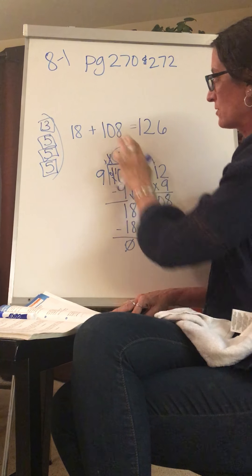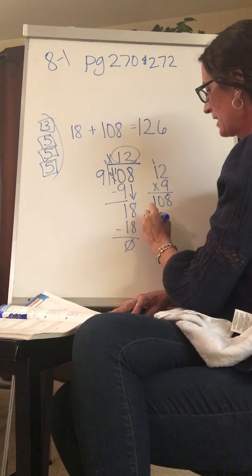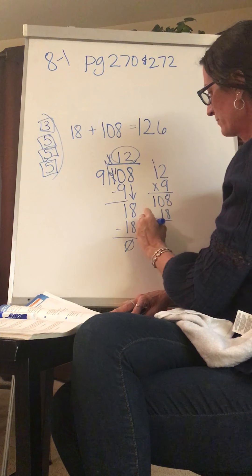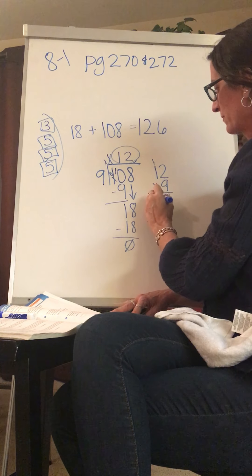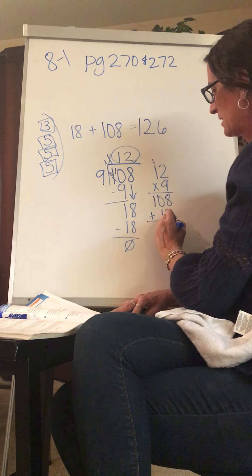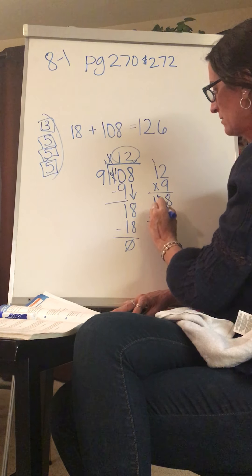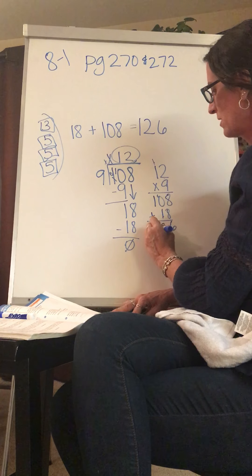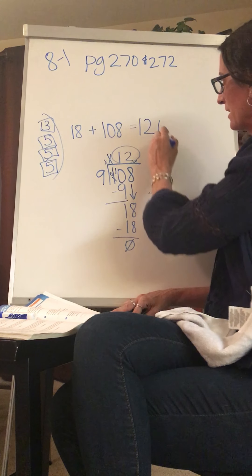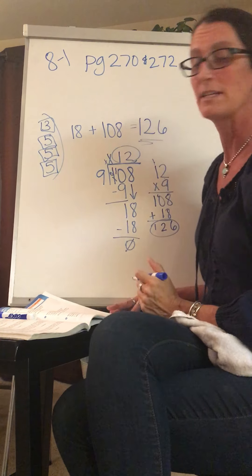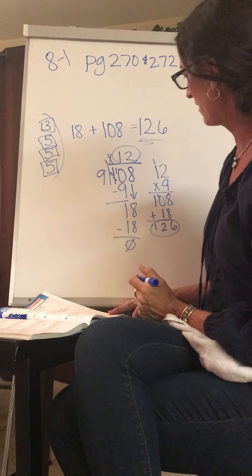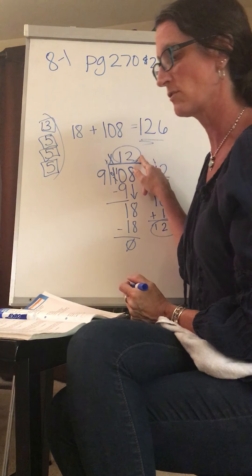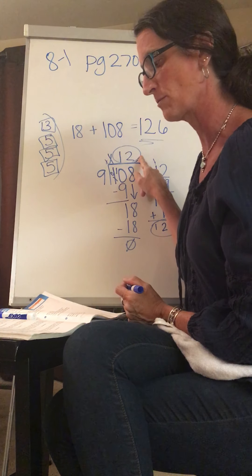There's my 108. Plus 18: eight plus eight is 16, one plus one is two, and I get 126. So I know that he found 12 pencils in each of those nine classrooms.